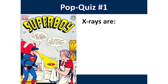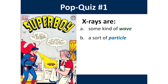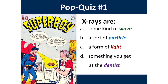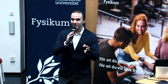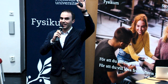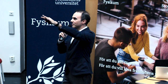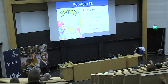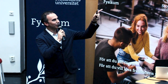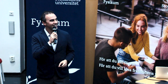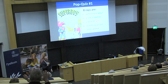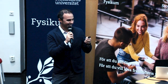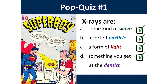Let's start with a pop quiz. I want you all to participate. X-rays are: A, some kind of wave; B, a sort of particle; C, a form of light; or D, something you get at the dentist. It could be that more than one of these is correct. Who thinks A? I see several hands. Who thinks B? More or less the same hands. How about C? A bit more. And D? Looks like people are familiar with D. And it's true — they are all correct, of course. You cannot be wrong with this one.